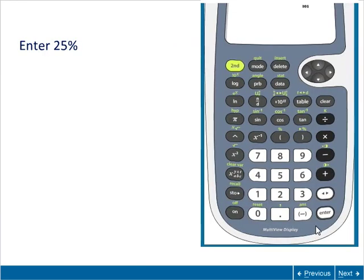To enter a percent, click the percentage number, then click Second, then click the percent button. After each calculation, click the Clear button to clear the display.